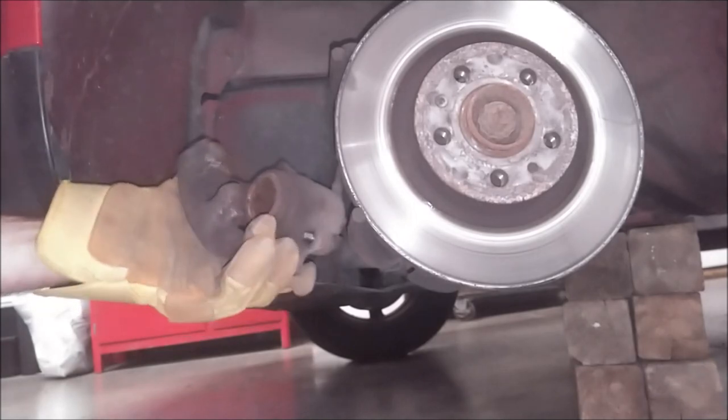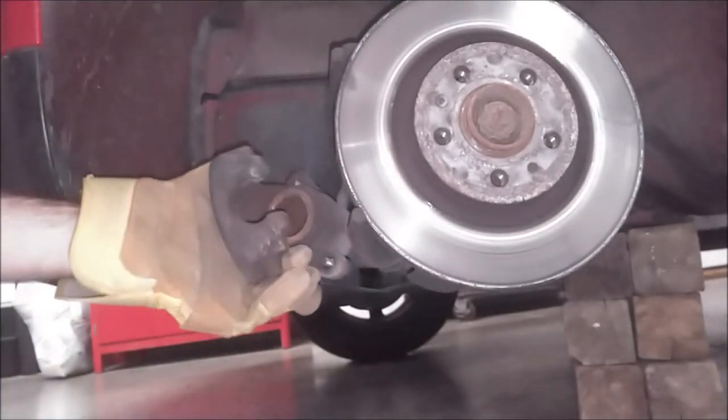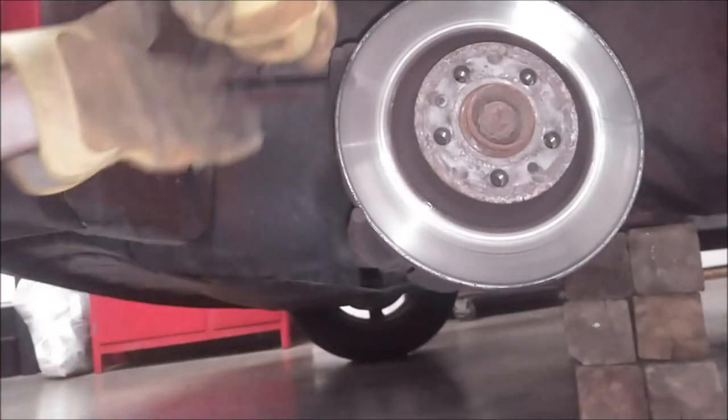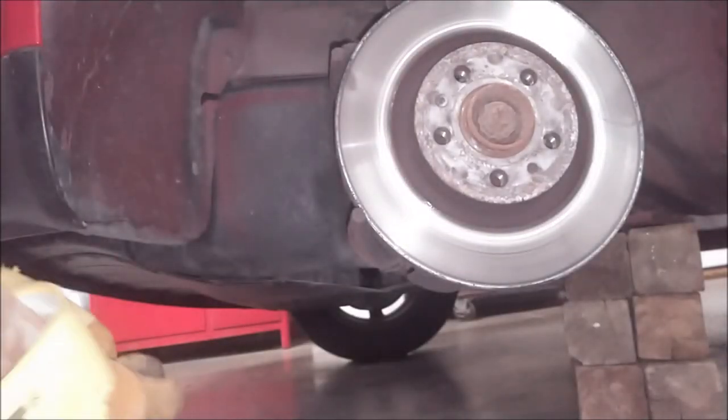So these pads are junk. Now, the caliper, you should probably get something and tie it up out of the way. I don't want to let it hang by this brake line. I'm just going to set it on top of the rotor for the time being. I'm going to go get some string and tie it off.